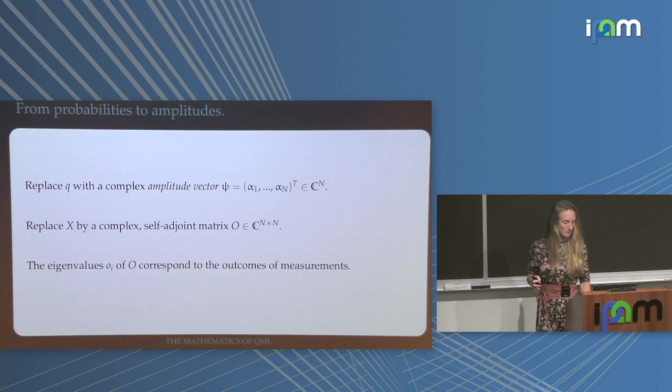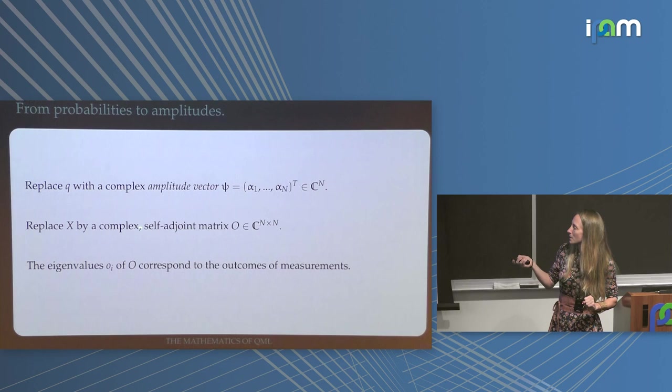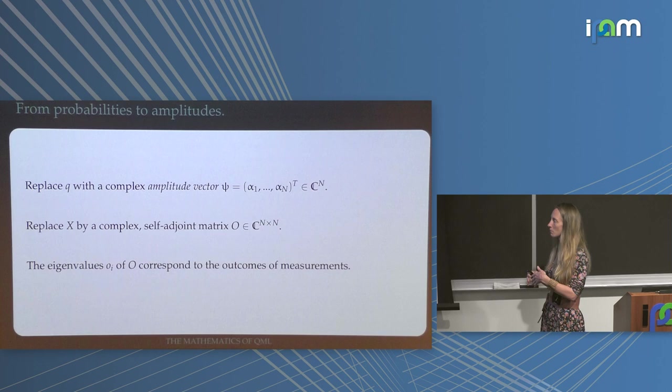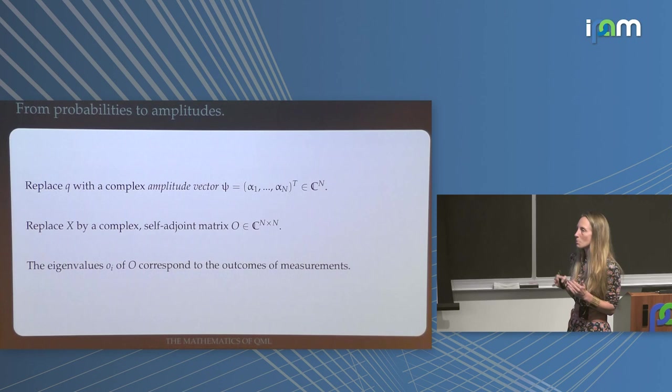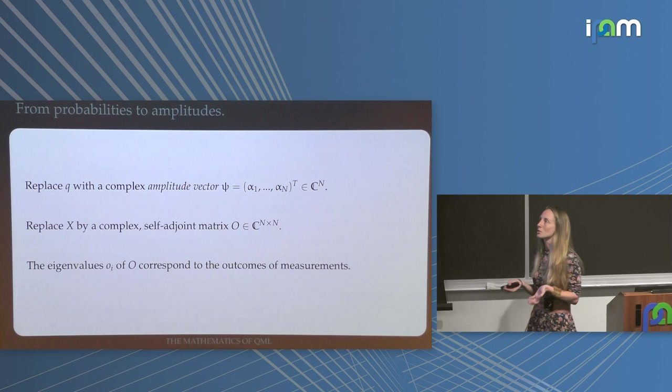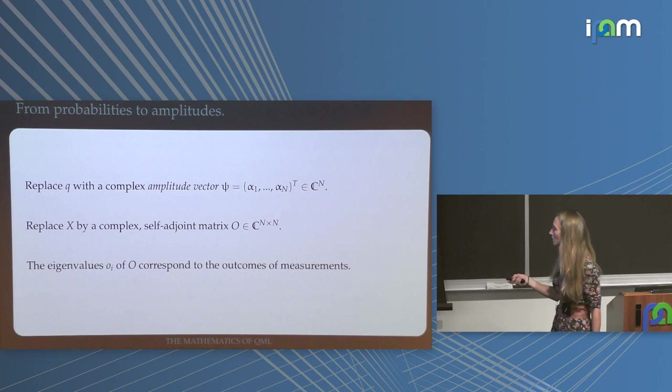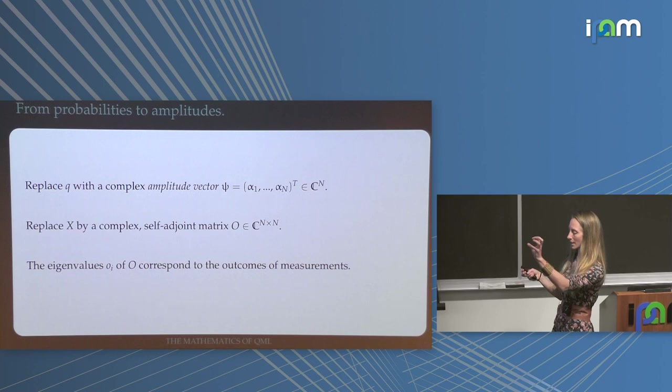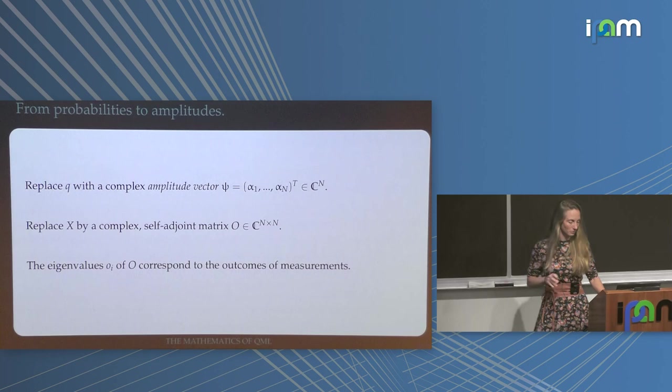More precisely, X is replaced by a complex self-adjoint Hermitian matrix. Why Hermitian? Because Hermitian matrices have real eigenvalues — if we had complex eigenvalues, it would be complicated to interpret measurement results. Most of the mathematical structure of quantum theory is literally just a helper for things to look physical in the end. The eigenvalues of this matrix correspond to the outcomes of measurements.